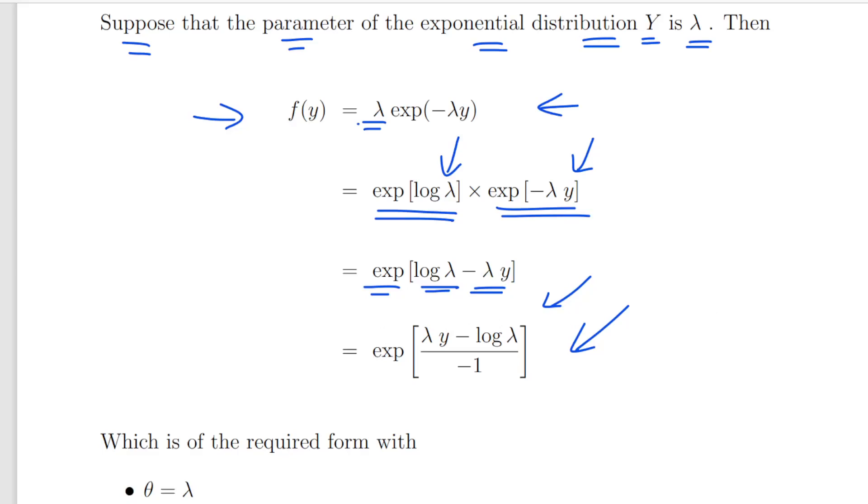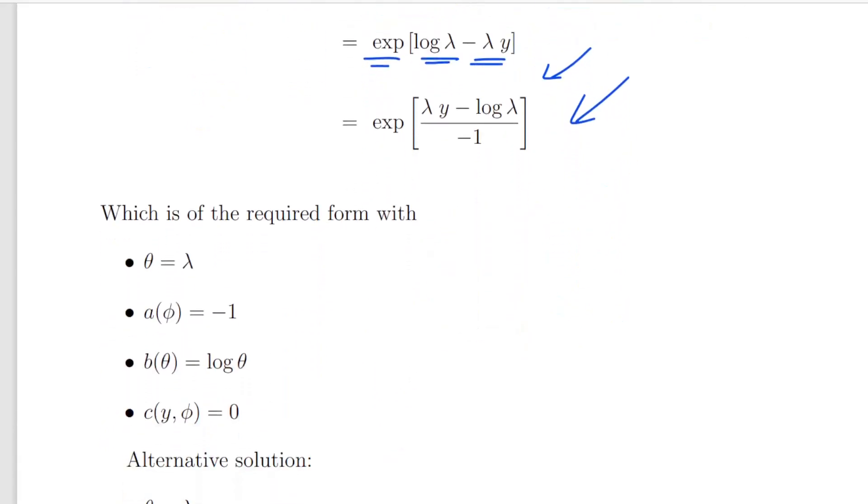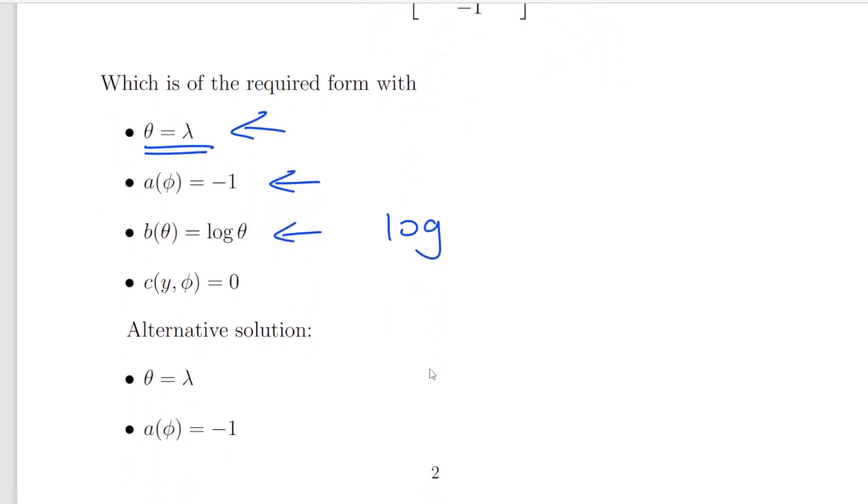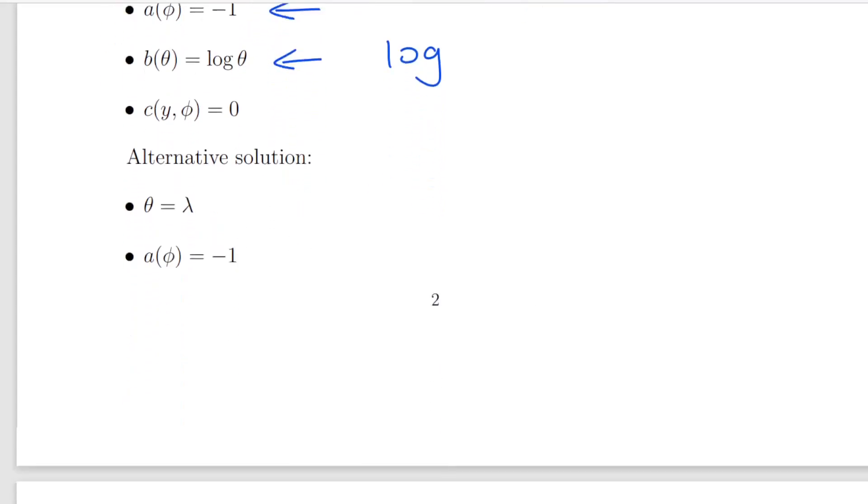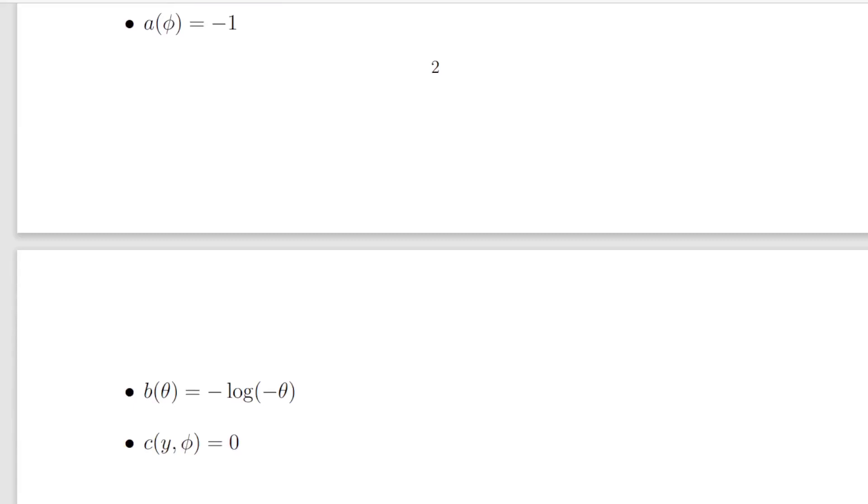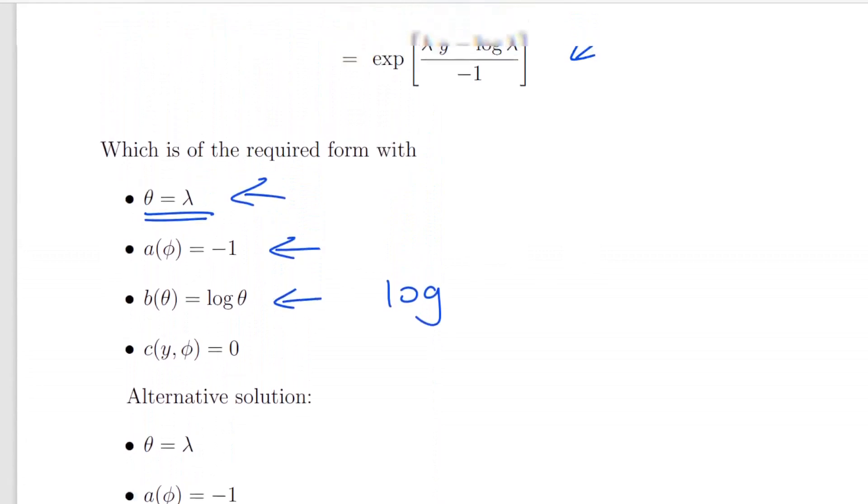So theta here is lambda, a of phi is minus one, b of theta is log theta, or log lambda. Here lambda equals theta for the purposes of what we're doing, and c of y, phi equals zero. Just alternatively you can construct it in the following format using b of theta equals minus log of minus theta, which is the same thing.